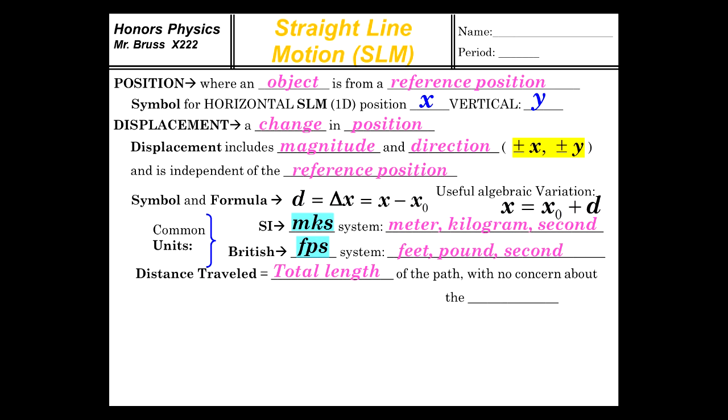Distance traveled. Total length of the path. No concern about the direction. So here I am. I'm starting here. I go one unit forward, two units backward. The displacement, you should recognize, as negative one. The distance traveled was, well, one unit forward, two units backward. The distance was three, while the displacement is negative one. So you can see that there's a big difference between those two. Total distance, you just add up all the individual legs of a particular path.